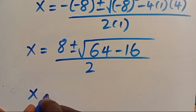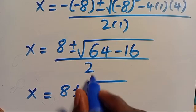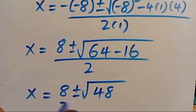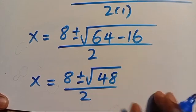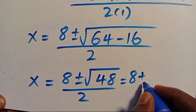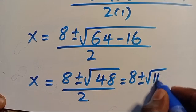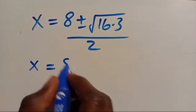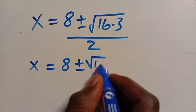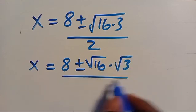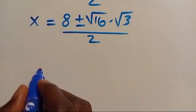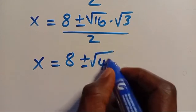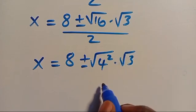So we have X equals 8 plus or minus root of 64 minus 16, which gives us 48, divided by 2. We can simplify root of 48 as root of 16 times 3, divided by 2. Since 16 is a perfect square equal to 4 squared, this becomes 4 multiplied by root 3, divided by 2.